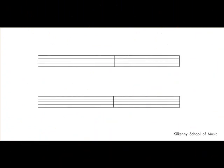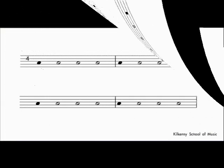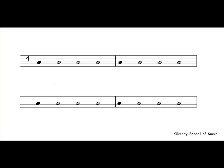At the start of a piece, we write a time signature, which tells us how many beats in a bar — two, three, or four. Most often, each beat is a crotchet. The clearest way to show this is to put a crotchet in the time signature here.